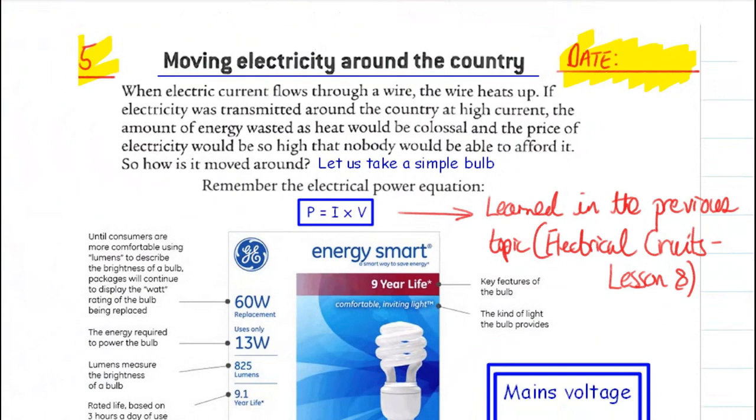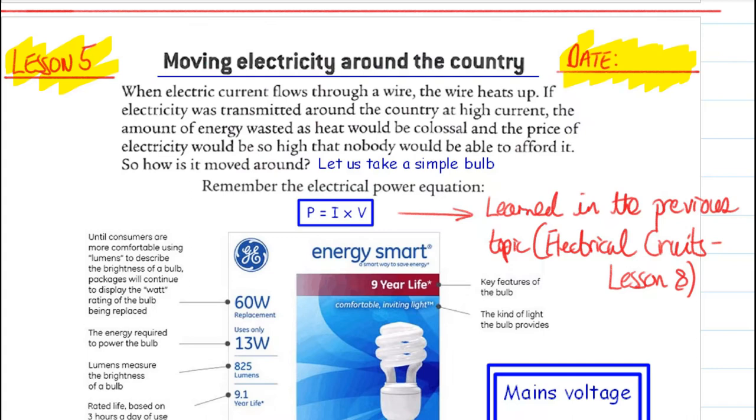So firstly, I'd like you to read that paragraph. Just pause the video and read the paragraph. What you should have learned from that is this crucial part here. A high current flowing through a wire wastes energy as heat. But in this case, we don't want heat. We don't want to be losing heat energy when we're moving electricity around the country.